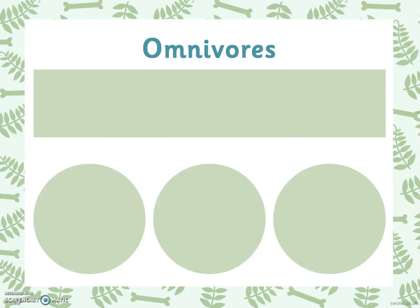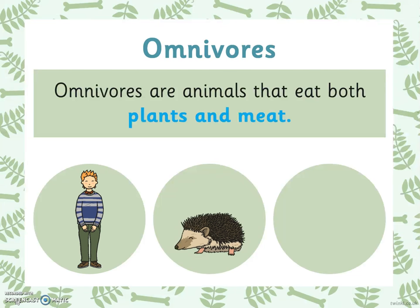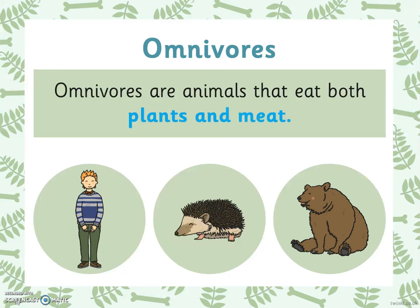The third group are called omnivores. Omnivores are animals that eat both plants and meat. Here are some different omnivores. This also includes human beings. So all of these animals below eat both plants and meat.